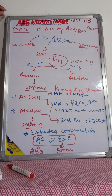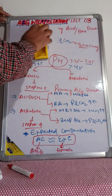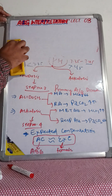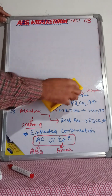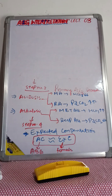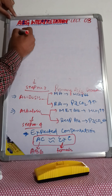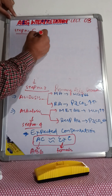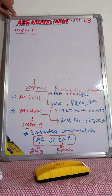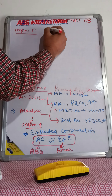Once you have gone through step number four, you shift to step number five — the last step. We are about to finish our lecture. In step number five, you will determine whether there is a mixed disorder.